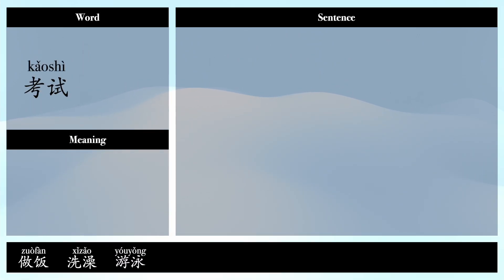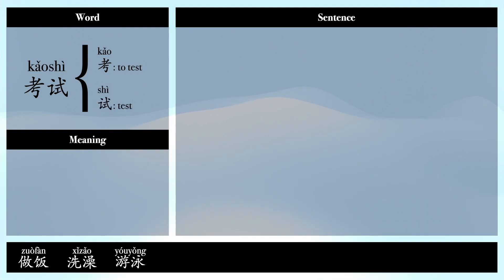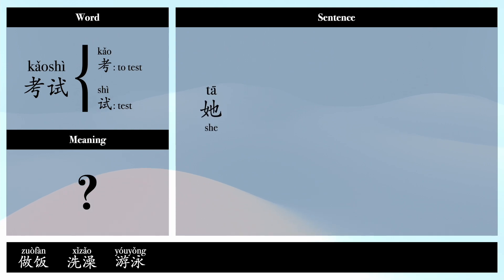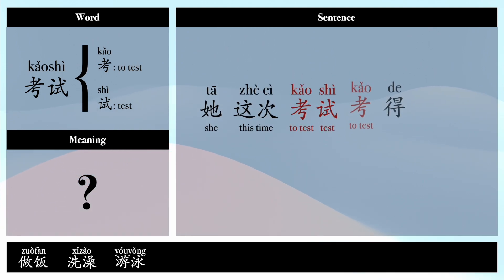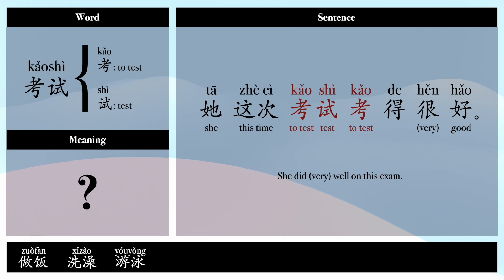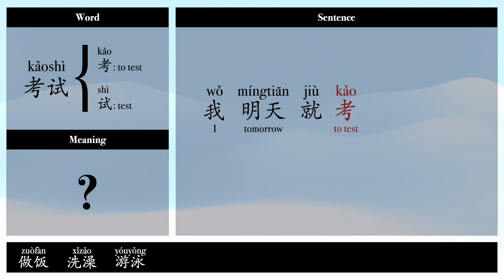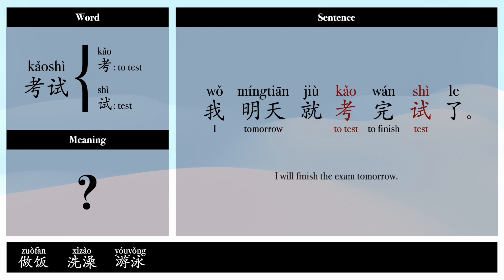考试 — 考: to test, 试: test. Example sentences: 你们什么时候考试? (When do you have your exam?) 他这次考试考得很好。(He did very well on this exam.) 我明天就考完试了。(I will have finished my exam by tomorrow.)